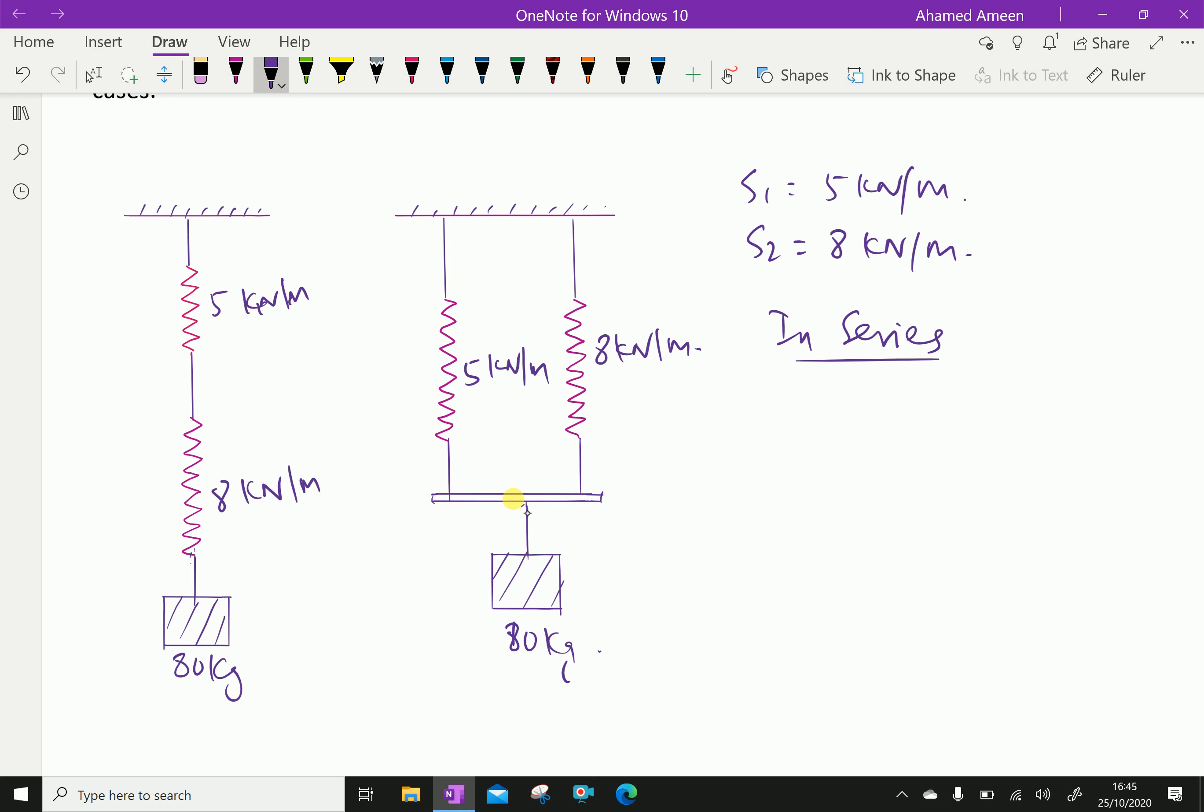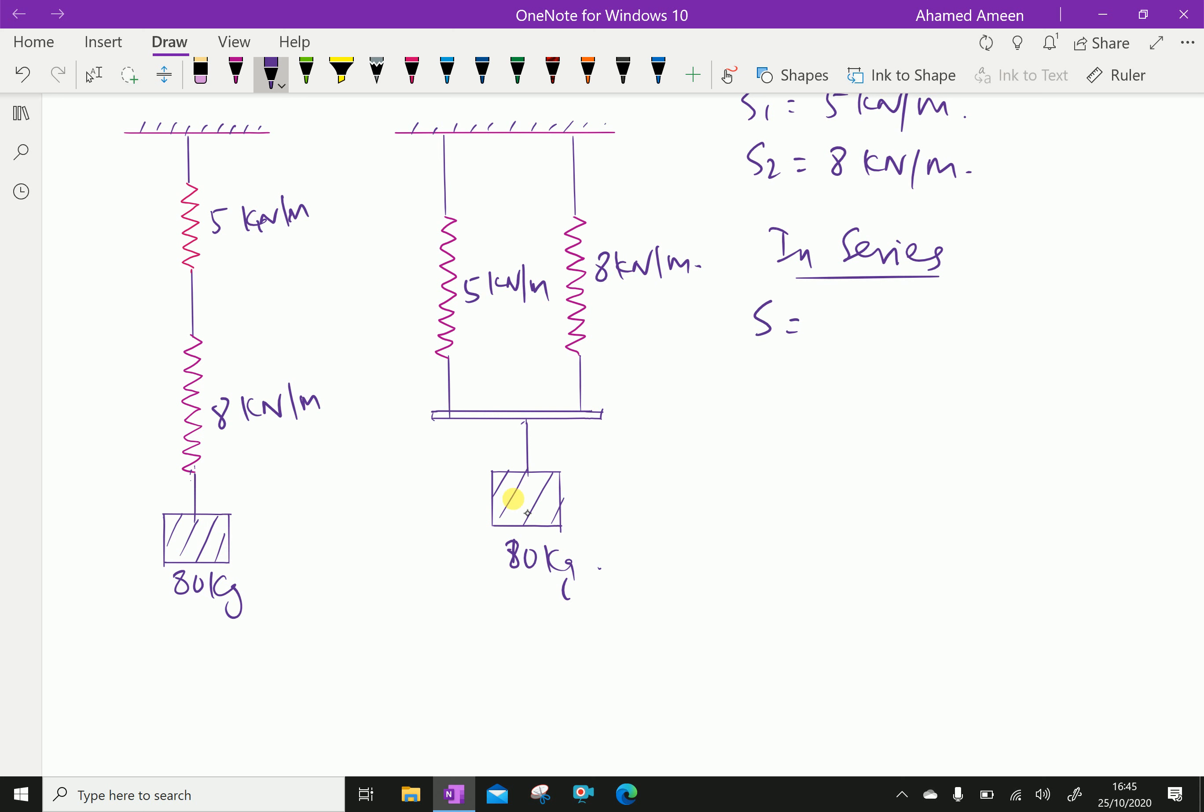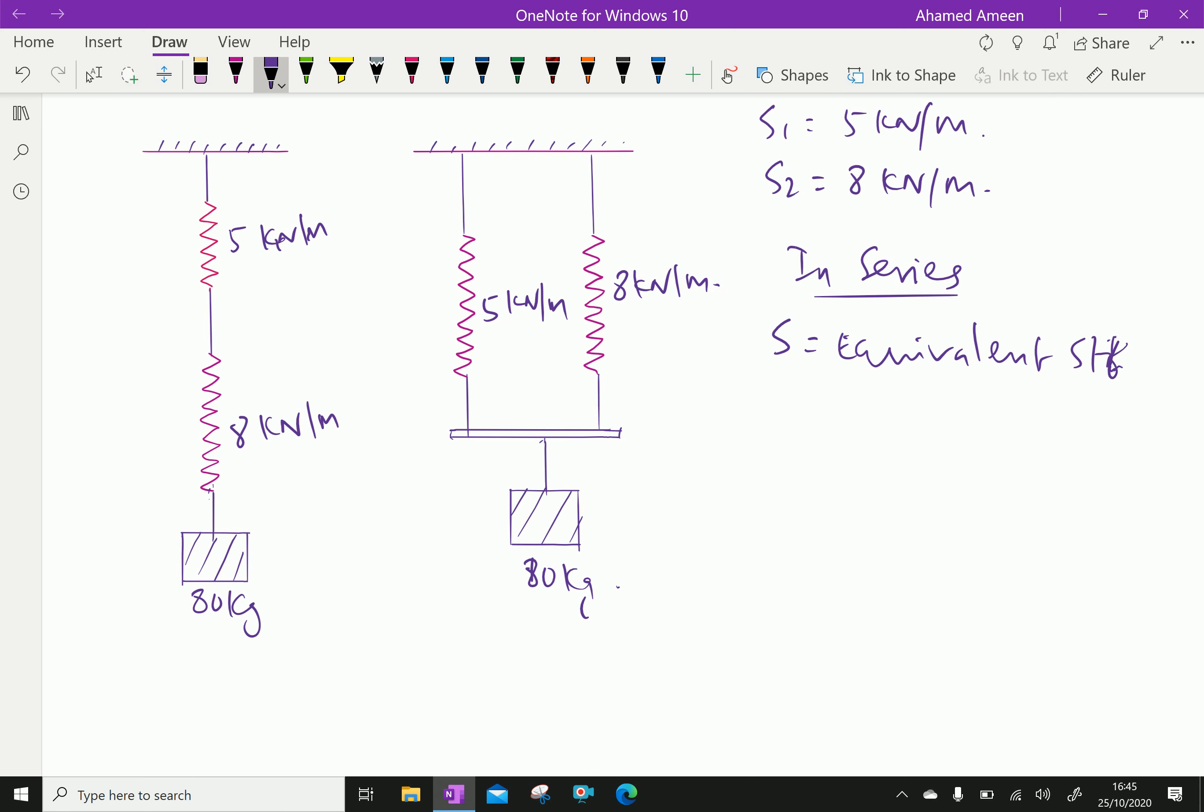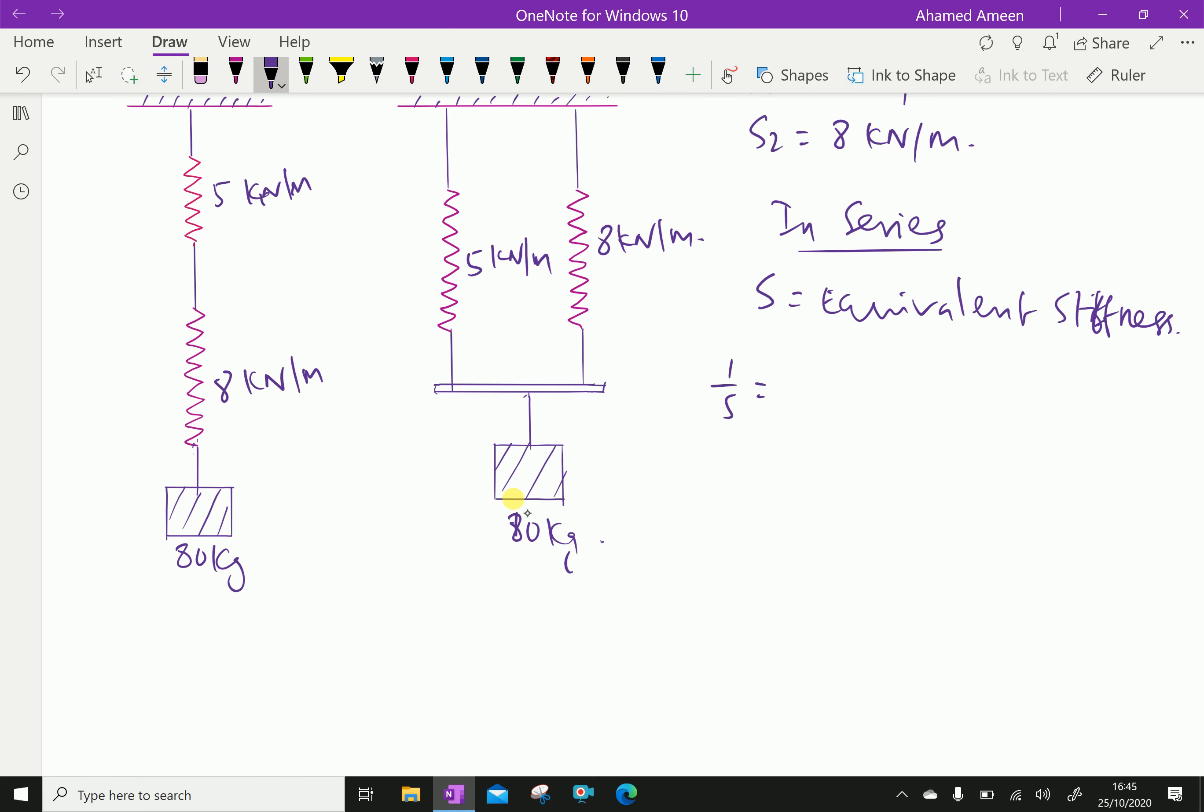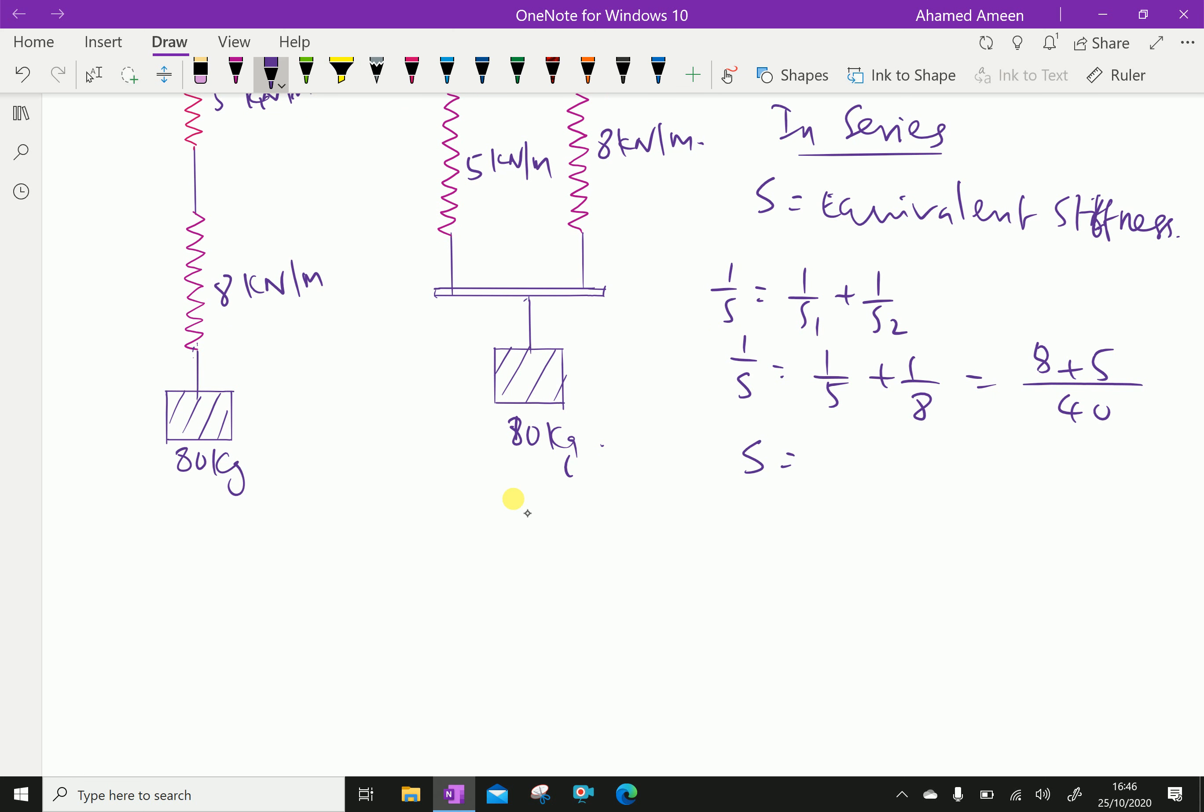Let S equal equivalent stiffness. The equivalent stiffness, we can write in series, it is 1 over S equal 1 over S1 plus 1 over S2. And then 1 over 5 plus 1 over 8, which is equal 8 plus 5 over 40. Therefore, equivalent stiffness S equal 40 over 13, which is equal 3.077 kN per meter.